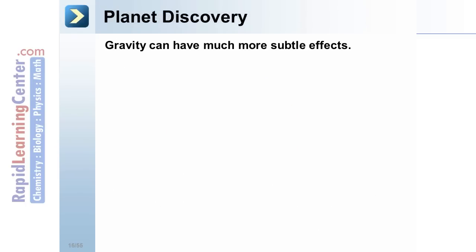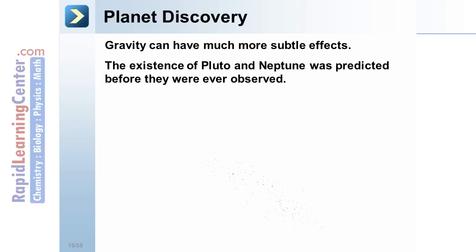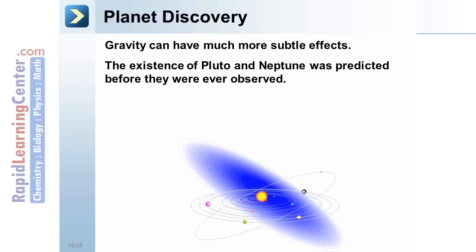Planet Discovery. Gravity can have much more subtle effects, sometimes hardly noticeable. For example, the existence of Pluto and Neptune was predicted before they were ever even observed.